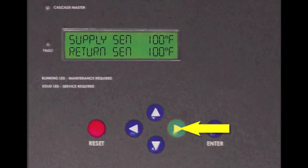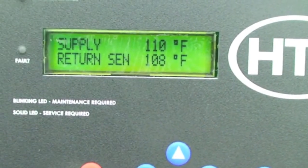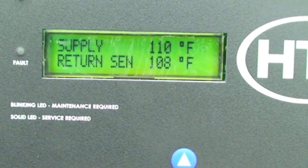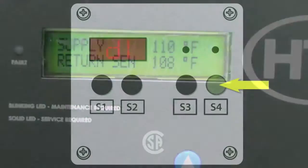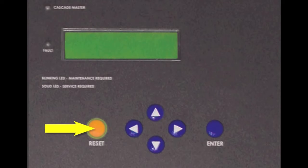You can further check the temperature by going into the status menu and see what the temperature is showing on the supply sensor. The boiler will not restart until this cause of excessive temperature is repaired and the reset button is pushed on the display.